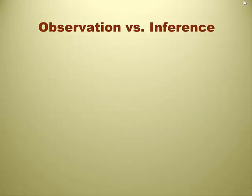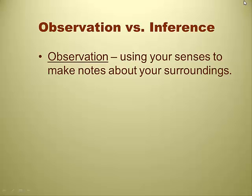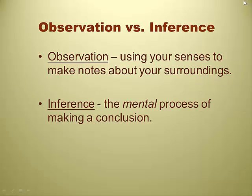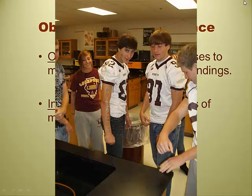Observation versus inferences — strictly by definition. An observation is using your senses to make notes about your surroundings — your eyes, nose, ears, etc. Inferences are the mental processes of making a conclusion, and they are usually based on established prejudices. For example, just because a student walks in with a Lockport football jersey on does not necessarily mean he plays football. If I say 'oh, a football player,' that's an inference — maybe he's just wearing the jersey.